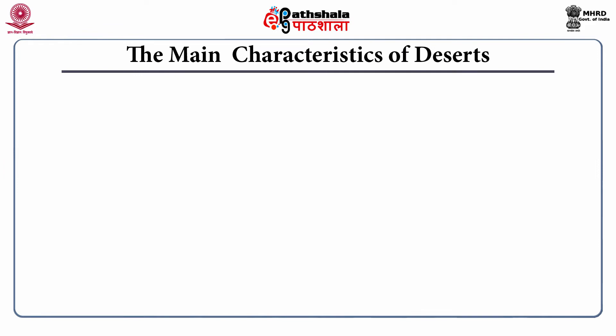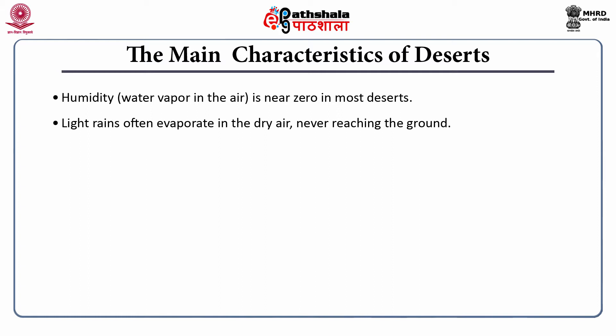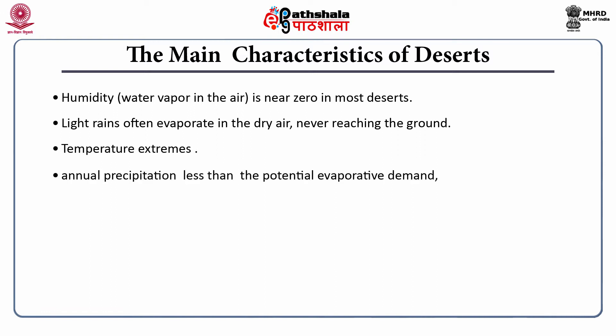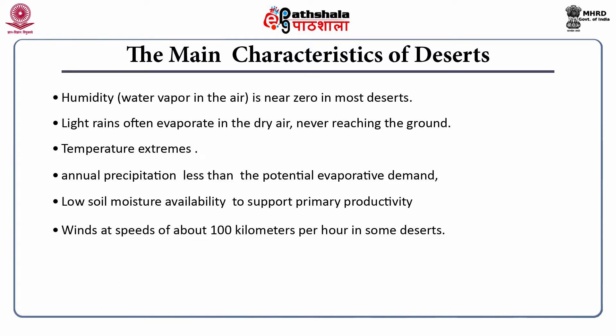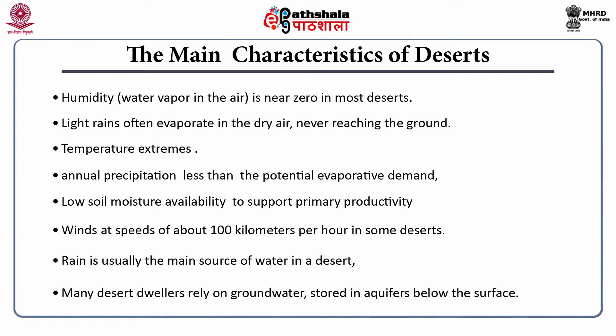The main characteristics of deserts: First, humidity is near zero in most deserts, and light rains often evaporate in the dry air before reaching the ground. Second, temperature extremes — annual precipitation is less than the potential evaporative demand, and soil moisture availability is low. Winds can reach speeds of about 100 kilometers per hour in some deserts. Rain is usually the main source of water, but many desert dwellers rely on ground water stored in aquifers below the surface.